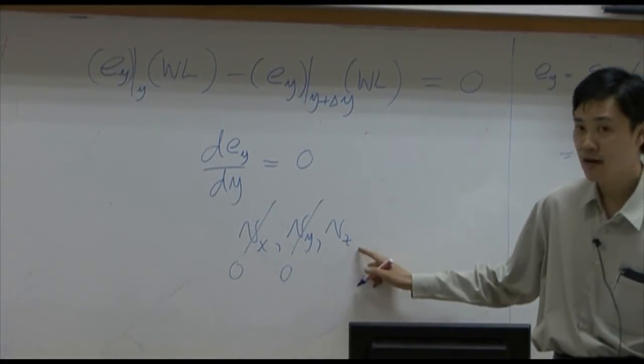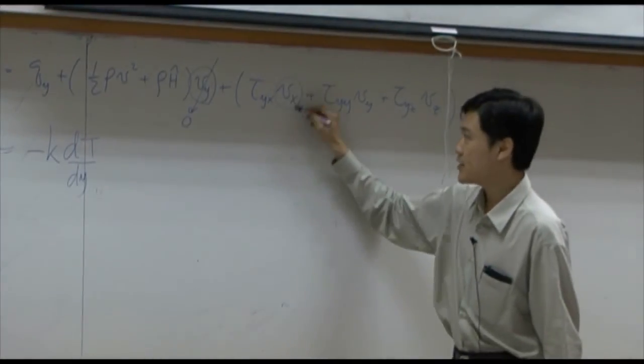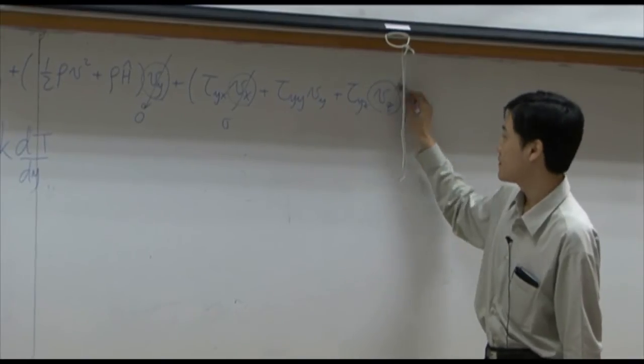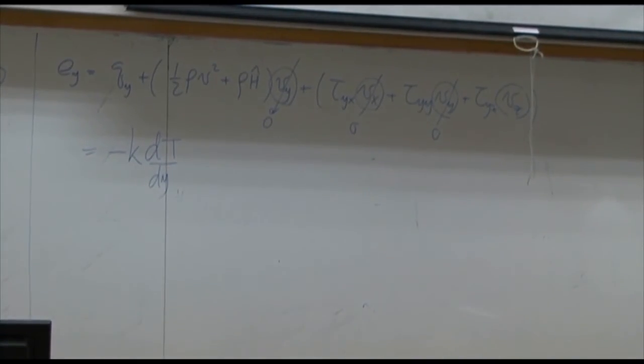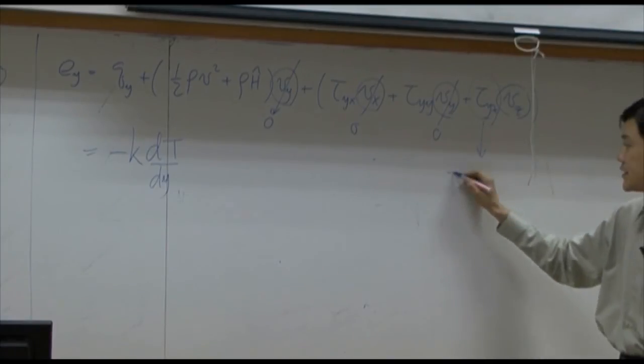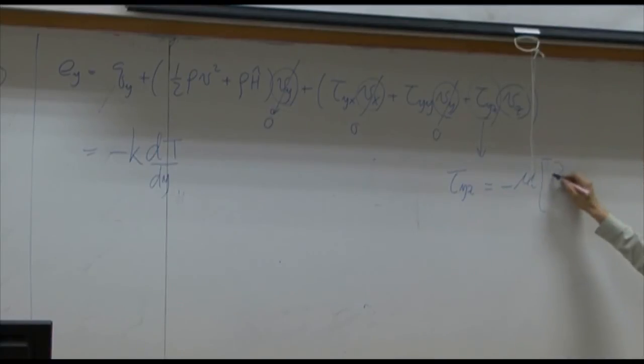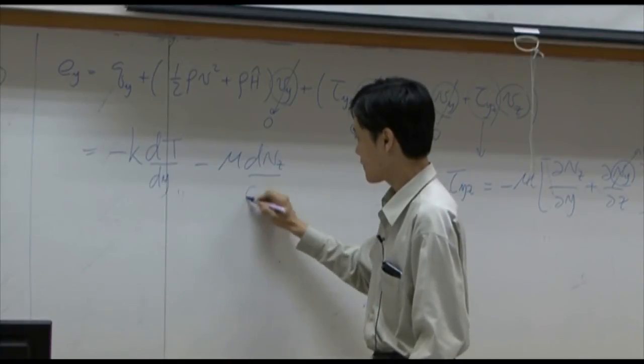Vy is zero. We have vz only. And vz here is function of y. So vx here is dropped. Vz is not zero. Vy is dropped. Tau yz can be, I mean, you can use Newton's law to describe tau yz. And vy here is zero. Vc is function of y. So you need to keep this term. So at the end, you have two terms.